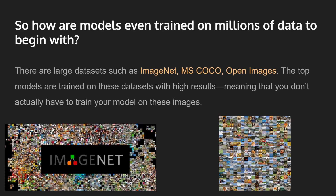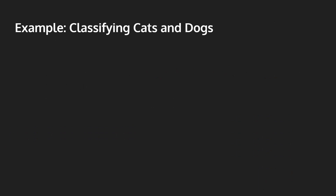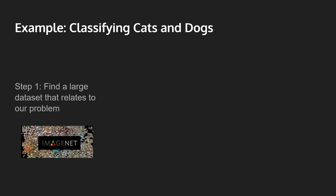Now let's go through an example of how transfer learning actually works. Say that we're classifying cats and dogs — how will we approach this problem using transfer learning? We could theoretically label millions of images on our own, but we can also simply find a large dataset that relates to our problem. In this case, let's just use ImageNet, because ImageNet has a lot of images of cats and dogs — it has a lot of images of everything, in fact.